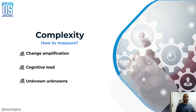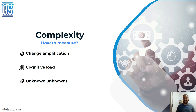To recap: Change Amplification — how many files or repository points you need to touch to deliver a new feature. Cognitive Load — how many days and how much documentation you need to read to understand what's going on inside the product. And the last one, which is impossible to fully handle, is Unknown Unknowns. It happens. We don't like it, but it happens more than we wish.